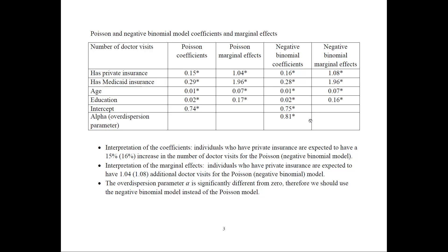The negative binomial model also includes an estimate of alpha, the over-dispersion parameter. This value is 0.81 and is statistically significantly different from zero, which means we should use the negative binomial model instead of the Poisson model because there is over-dispersion in the data. So in a paper you should report the negative binomial numbers. However, notice how close the Poisson and negative binomial coefficients and marginal effects are — they are very, very close, almost giving the same prediction.